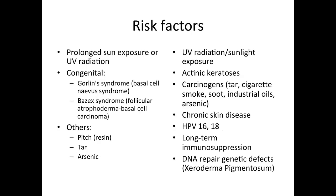Prolonged sun exposure and UV radiation are the main risk factors for developing BCCs and SCCs. It is also worthy to ask about industrial contacts with resin, tar, and arsenic, as these chemicals can increase the risk of acquiring both BCCs and SCCs. Genetic predisposition, such as Gorlin syndrome, can increase the risk of BCCs, whilst DNA-repair genetic defects, such as in patients with Xeroderma pigmentosum, will have an increased risk of developing SCCs.